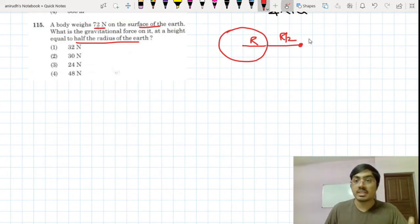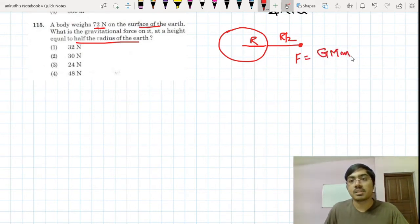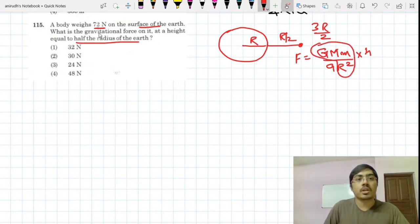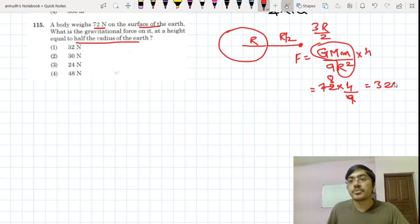Here, how much is the force? Force is equal to GMm divided by r square. So this is r plus r by 2, that is 3r by 2 whole square, that will be 9r square divided by 4. So this much, GMm by r square is equal to 72 newton. So that is 72 multiplied by 4 by 9, which equals 32 newton.